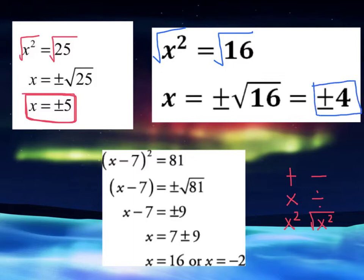And now I have a more complicated example at the bottom of the screen. Let's say that you have x minus 7 to the squared power equals 81. Just as I mentioned before, the inverse of a square is the square root. So if I take the square root of both sides, I'll get rid of that square, and it becomes x minus 7 equals plus or minus square root of 81.